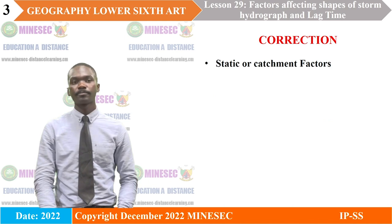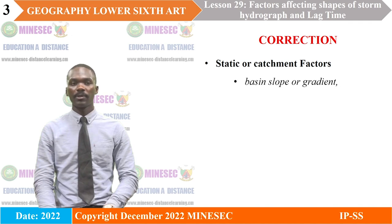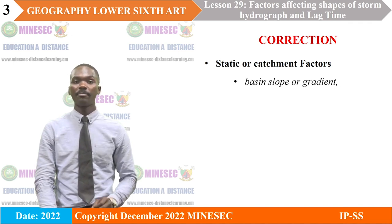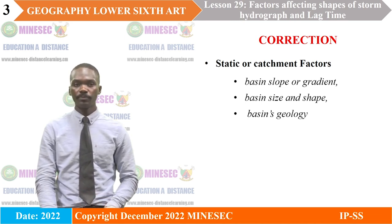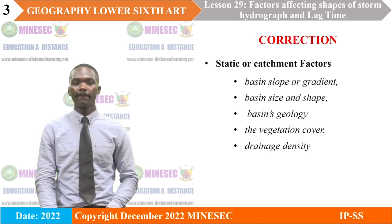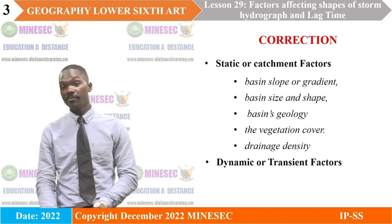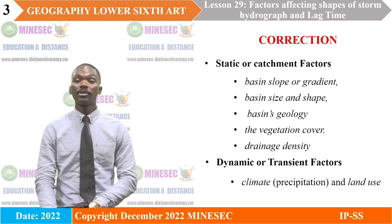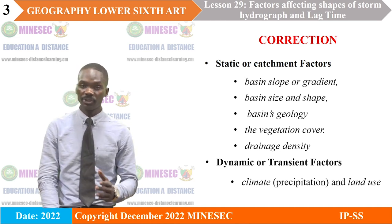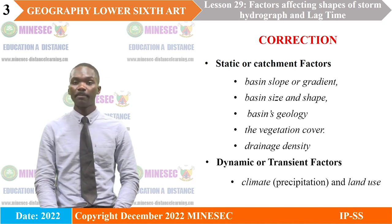Correction. Static or catchment factors, wherein we have the basin slope or gradient, basin size and shape, basin geology, vegetation cover, and drainage density. And dynamic factors or transient factors, which encompass the climate — especially precipitation — and land use, that is man's activities.